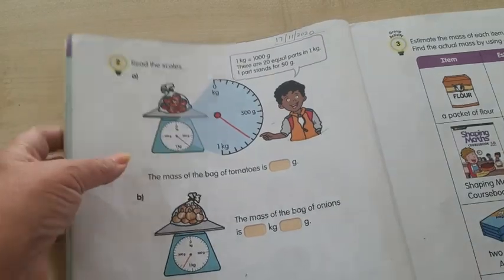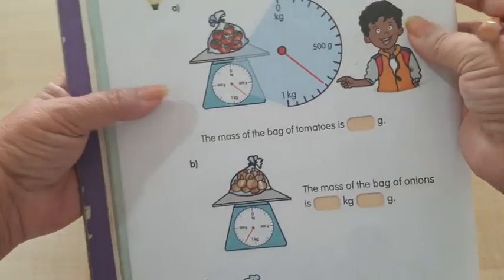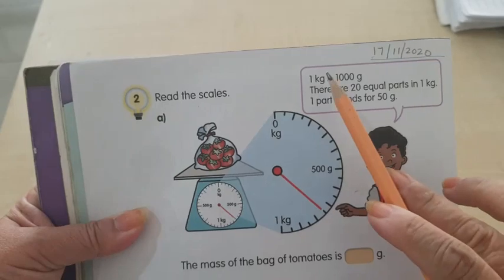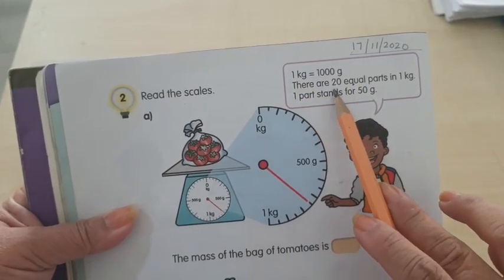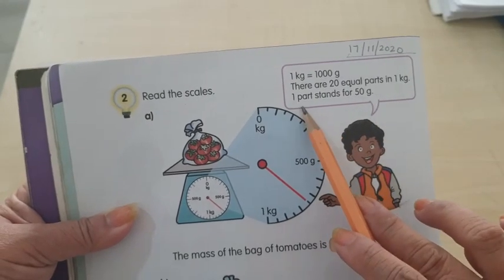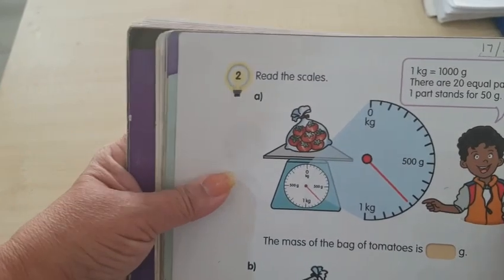Read the scale. Now look at this. One kilogram is 1000 grams. There are 20 equal parts in one kilogram. One part stands for 50 grams, so you can see over here.